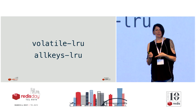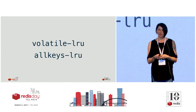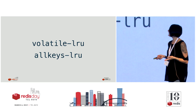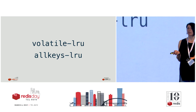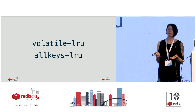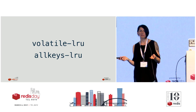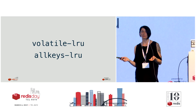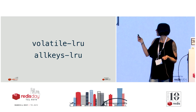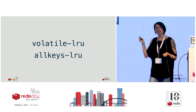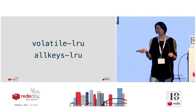That was the first LRU eviction policy. It came with two flavors: allkeys and volatile. If you wanted to evict keys among the full key space, you would select allkeys-LRU. Volatile-LRU would only evict keys with a set time to live.